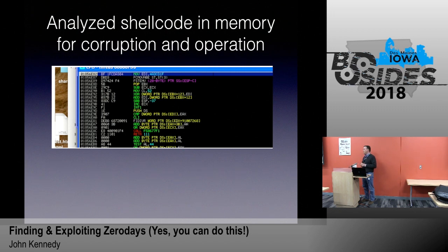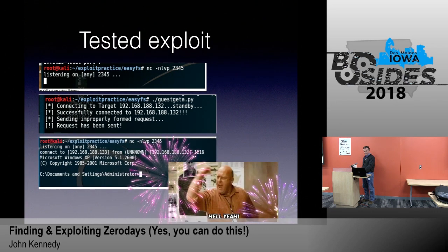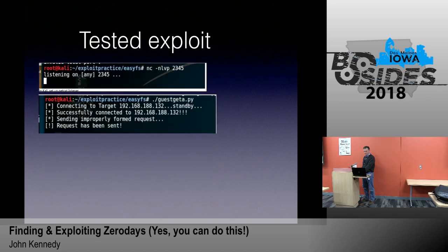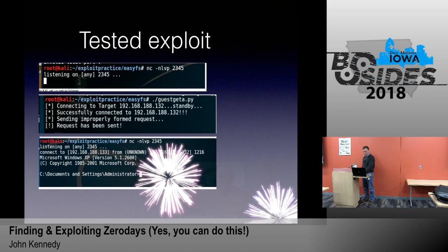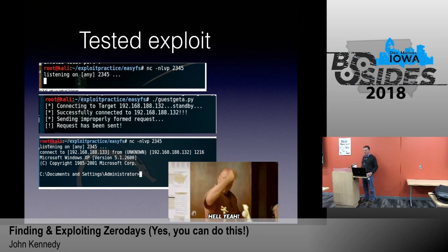So the next thing I did was test it. I set up a listener in my Kali Linux machine on port 235, and then in another terminal I executed the exploit. Got the normal connecting and sending indications, which was good. And was rewarded with a nice, shiny shell. And this was an administrator level shell, which was system.